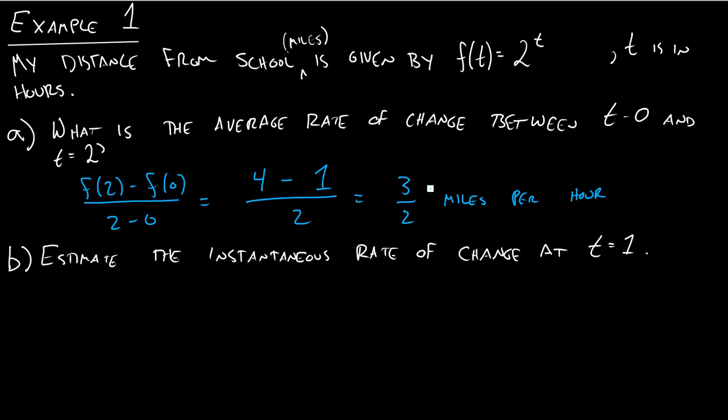So the question is, what does this 3 halves mile per hour mean? Does that mean I was always traveling at 3 halves of a mile per hour between 0 and 2? And the answer is no. I was traveling at different speeds, actually. Maybe, let's pretend I was driving in my car, even though this would be really slow. But this isn't saying my speedometer was 3 halves of a mile per hour the whole time. It was just saying if you average it out over the whole trip, that's what it was.